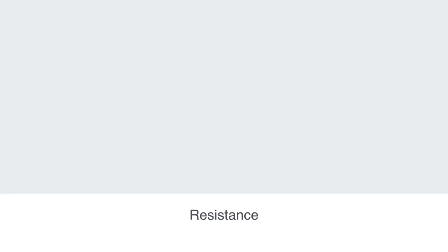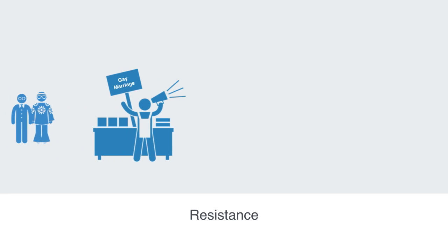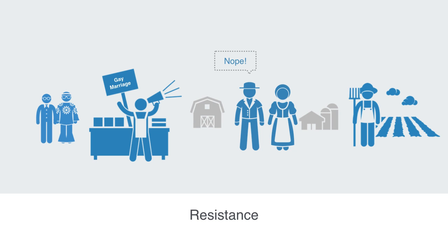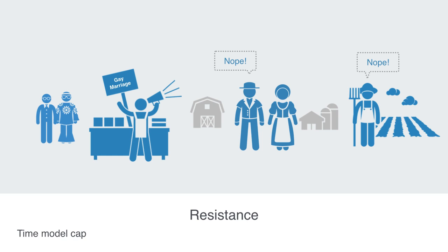Inversely, we need to think about how resistant the nodes in the network are to the spreading of this phenomena. Imagine trying to promote gay marriage in some conservative rural community — no matter how infectious your campaign might be, it is unlikely to take off, due not to your failures but to the resistance of the other nodes in the network to this particular phenomena. We might also add time to our model here, capturing how nodes may be infected for only a brief period before recovery, as would be the case with the spreading of many diseases or some trend in fashion.